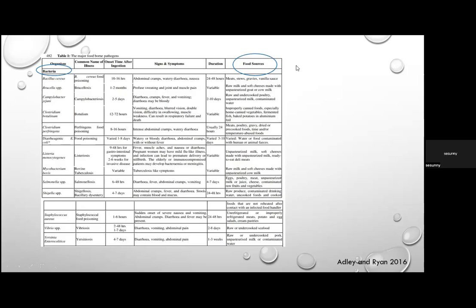Key examples: Bacillus cereus is associated with meats, stews, gravies, and fried rice; Clostridium botulinum with improperly canned foods, home-canned vegetables, fermented fish, and baked potatoes; Listeria with unpasteurized milk, soft cheese from unpasteurized milk, and ready-to-eat deli meats; Vibrio species with raw or undercooked seafood; Yersinia with raw or undercooked pork, unpasteurized milk, or contaminated water.